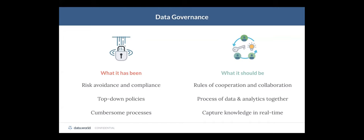What we feel data governance should be — and what our platform is designed to do — is that it's really the rules of cooperation and collaboration. We need to do it responsibly, but it's really the process of how we as an organization do data analytics together, thinking about how data producers and data consumers work together. And how do we capture knowledge in real time? One of the prevailing things about data governance has been pure metadata, which tells you a lot about how things should be, but doesn't necessarily tell you what the data work in progress looks like — and that's where agile concepts come in.